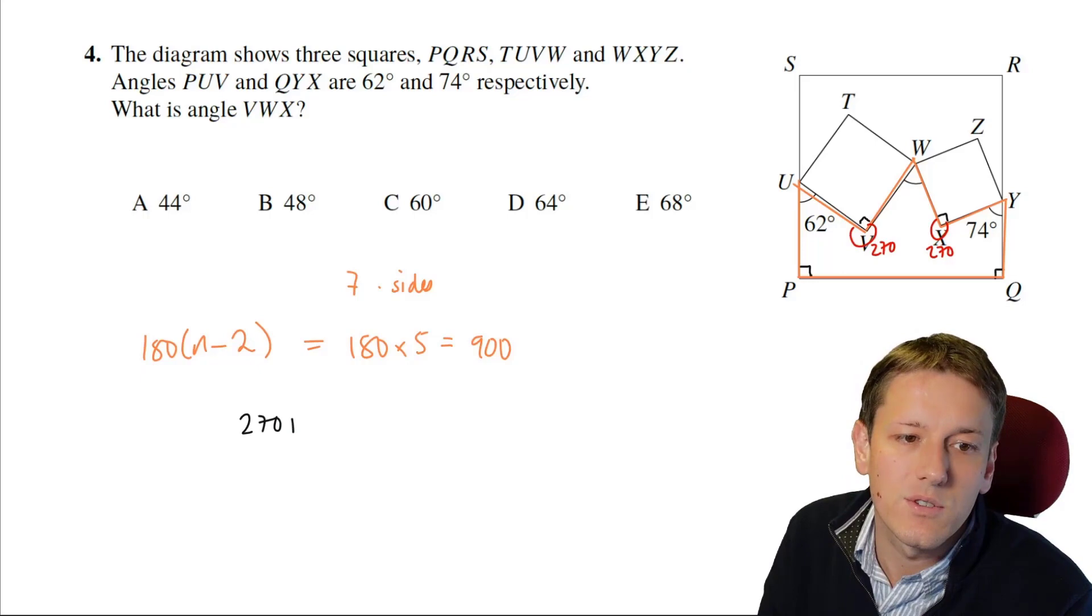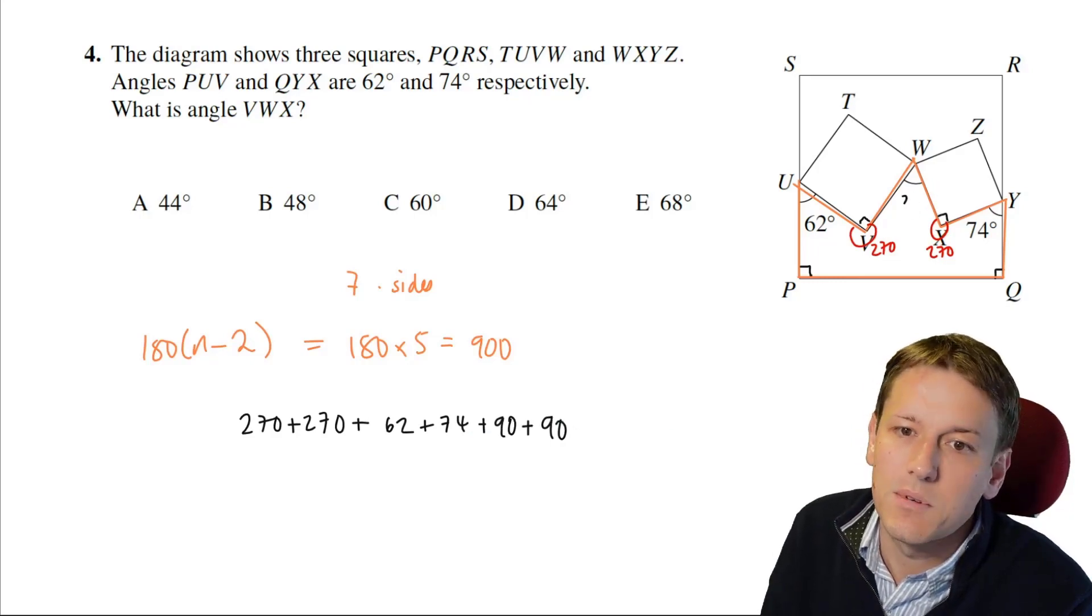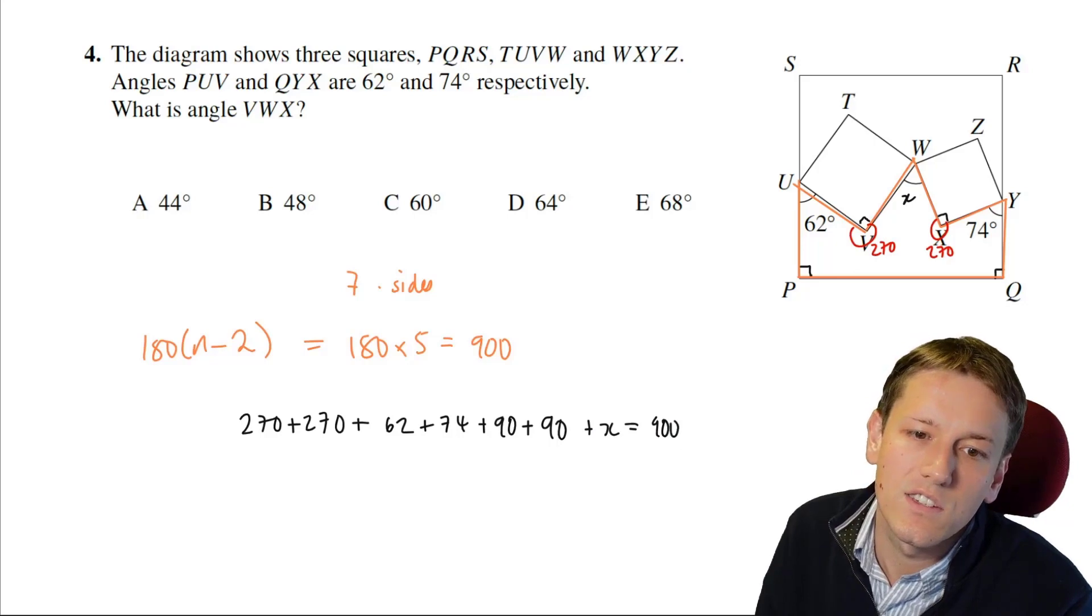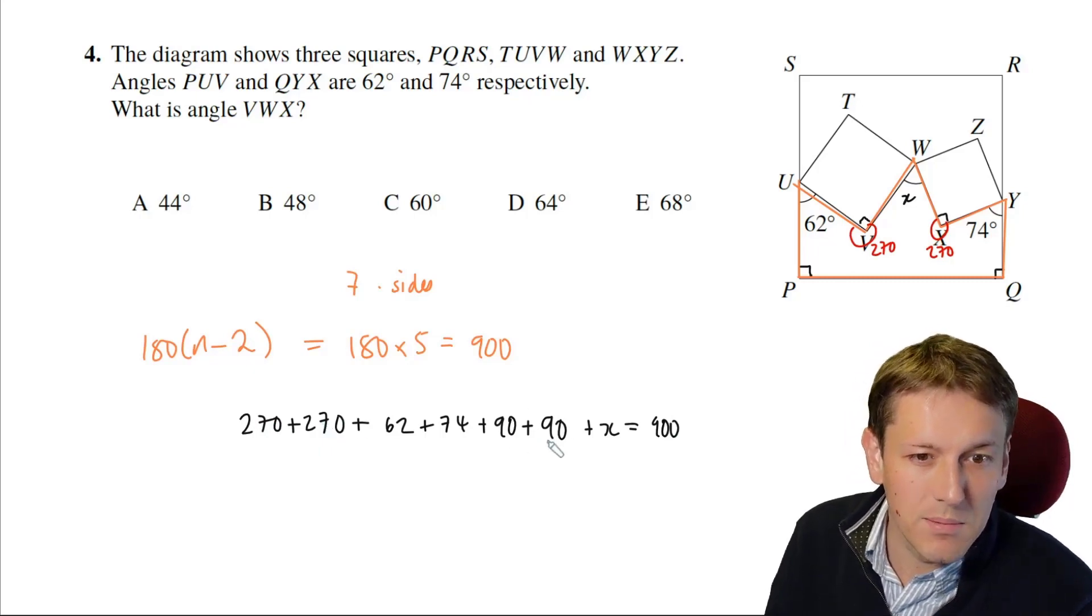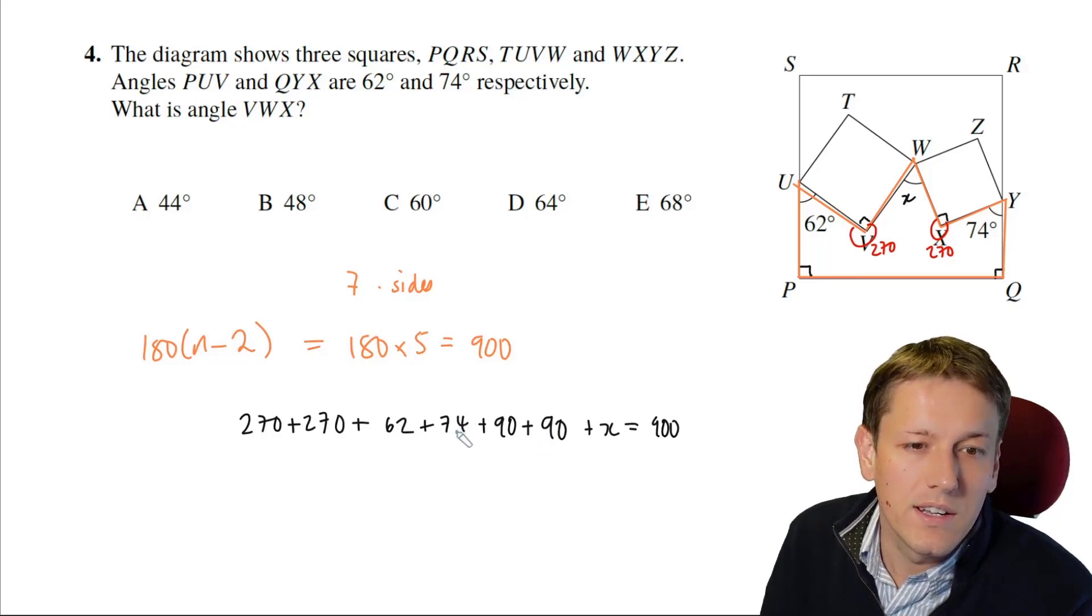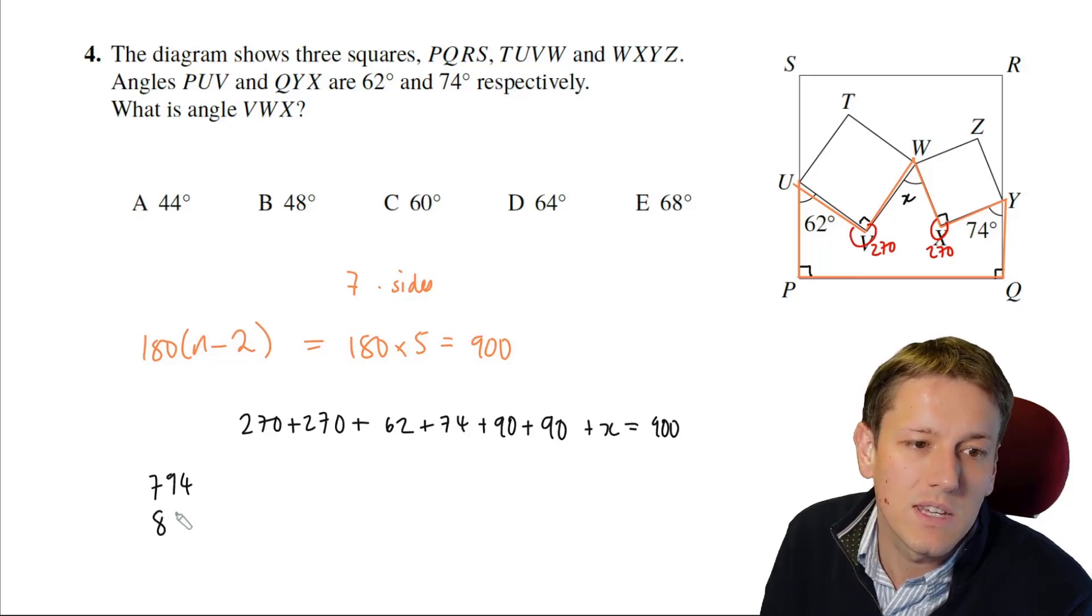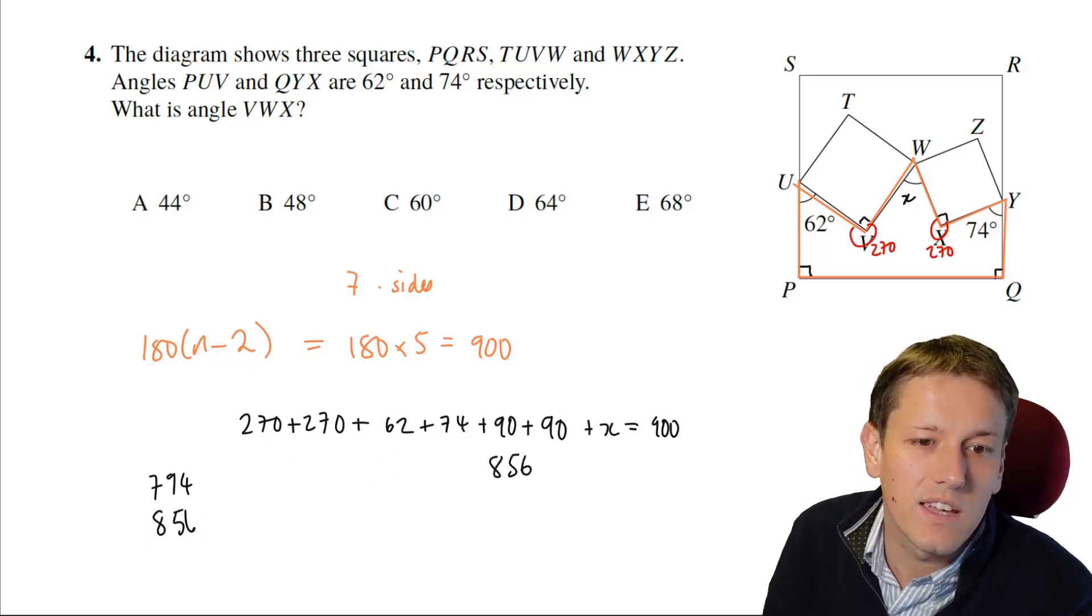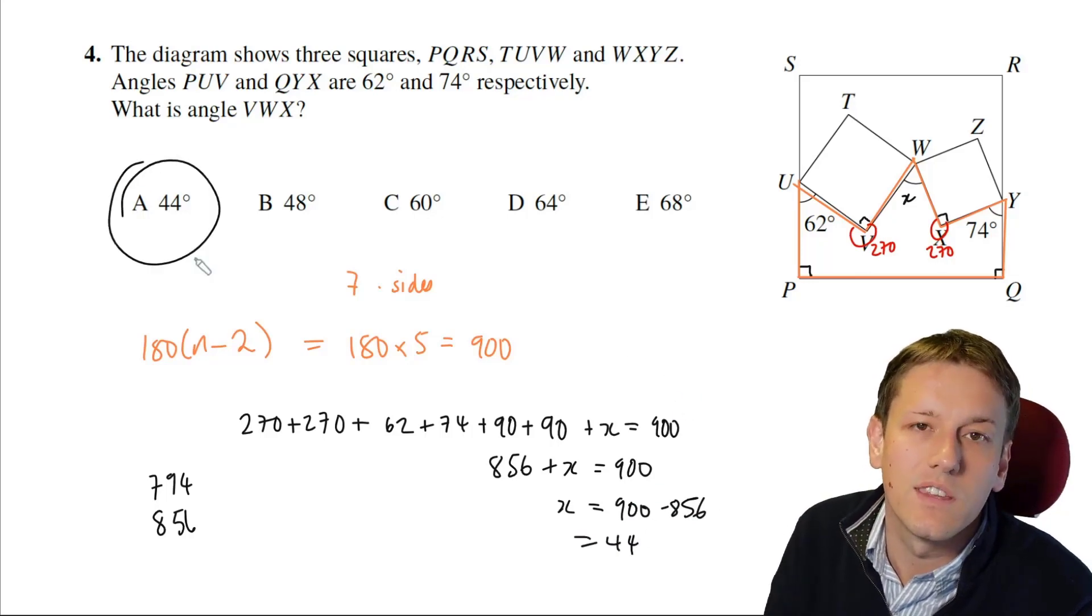So if I add all these angles together, 270 plus 270, plus 62, plus 74, plus 90, plus 90, plus the one we're looking for, let's call it X, I should get 900. So I just need to add these together and subtract from 900. So I've got 540 here plus another 180 gives me 720, plus 74 is 794, and then plus 62 gives me 856. So I've got 856 plus X is 900. So X is 900 minus 856, which is 44, and the answer is A.